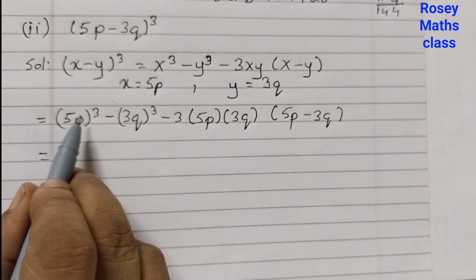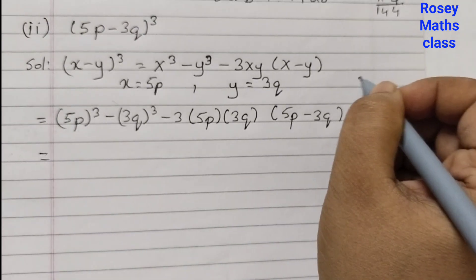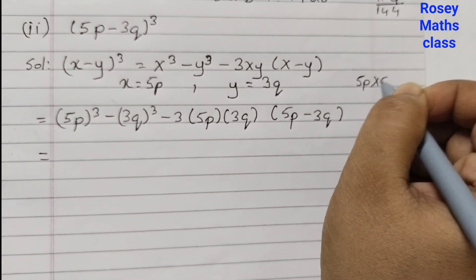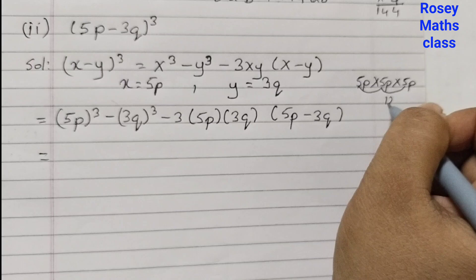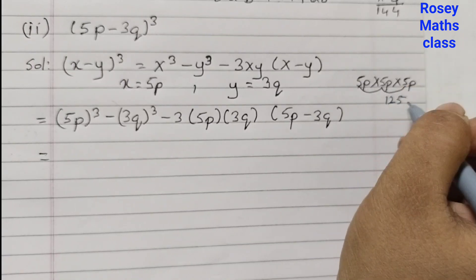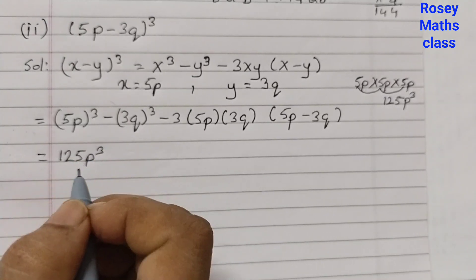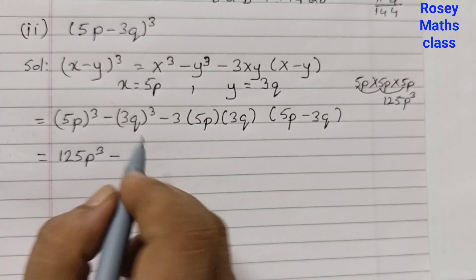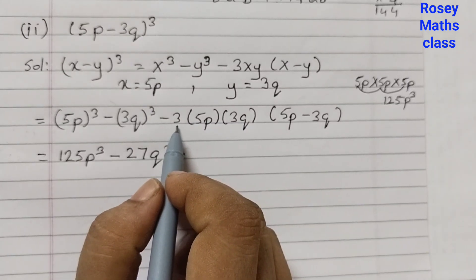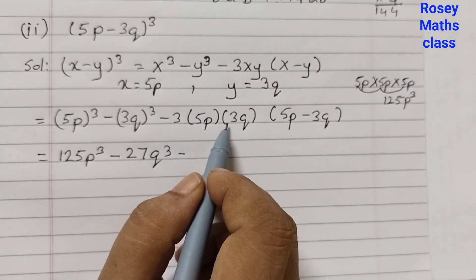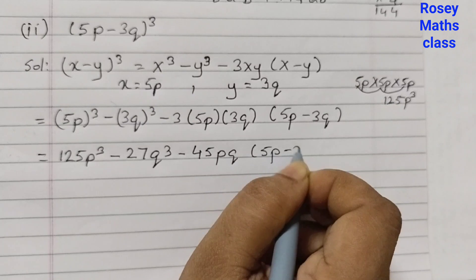5p cubed: 5p is multiplied 3 times, like 5p into 5p into 5p. So 5 times 5 is 25, 25 into 5 is 125, and p into p into p is p³. 125p³ minus 3 cubed: 3 times 3 is 9, 9 times 3 is 27, so 27q³ minus 3 into 5 is 15, 15 times 3 is 45. 45pq(5p - 3q).